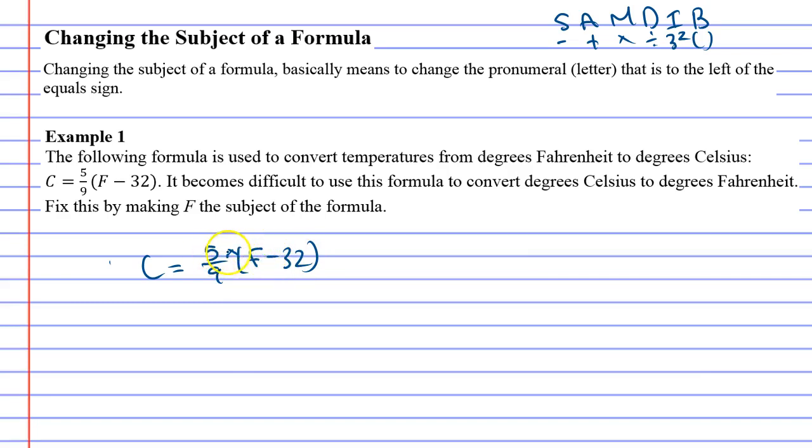And we've got a multiplication. We're multiplying 5 and we're dividing 9. So either one of those can be done in any order. So we'll focus on the 9 and we'll do the opposite. We'll times 9 and we'll times 9 over here.